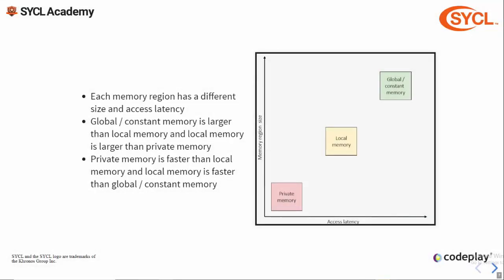Each memory region — private, local, and global — has a different size and access latency. Private memory is the smallest, with local memory being larger and global memory being much larger still. Global memory is the slowest to access as it's often accessed across an off-chip connection. Local memory is generally faster as it's usually on-chip, and private memory is faster still.